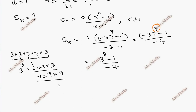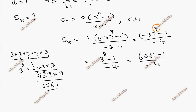So the numerator is 6561 minus 1, which equals 6560, and the denominator is minus 3 minus 1, which equals minus 4. So we have 6560 divided by minus 4.